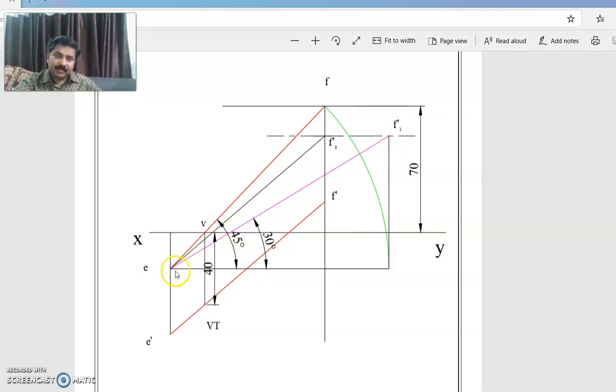And from E we will be drawing a line at an angle 30 degrees so that this point will be F1 dash.